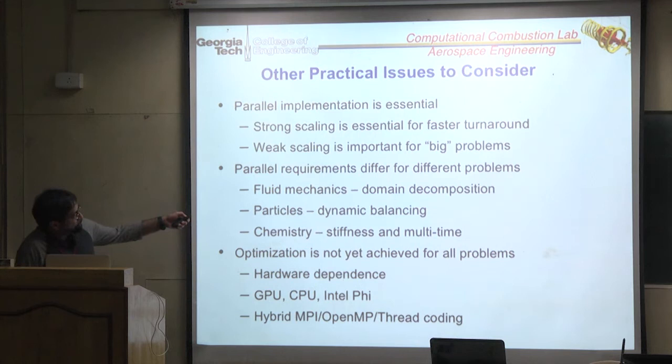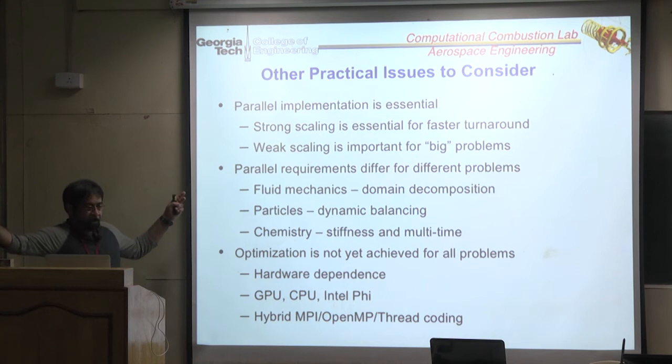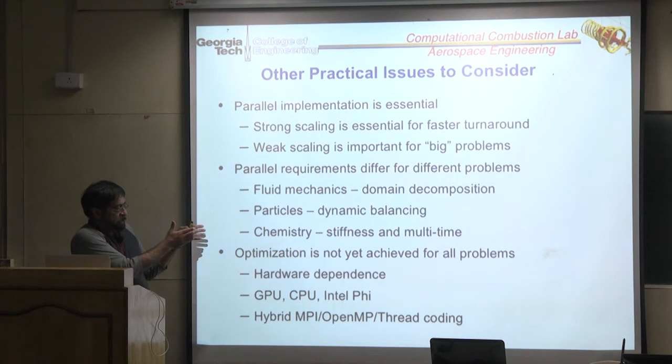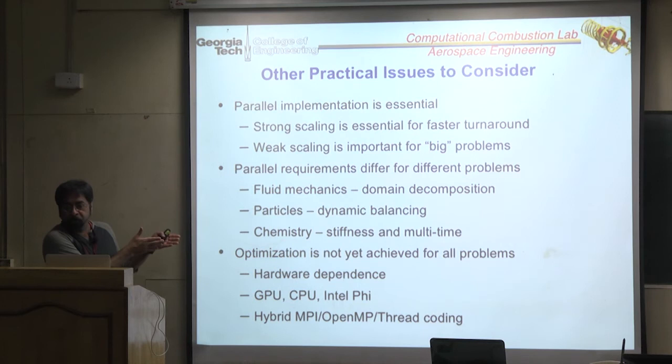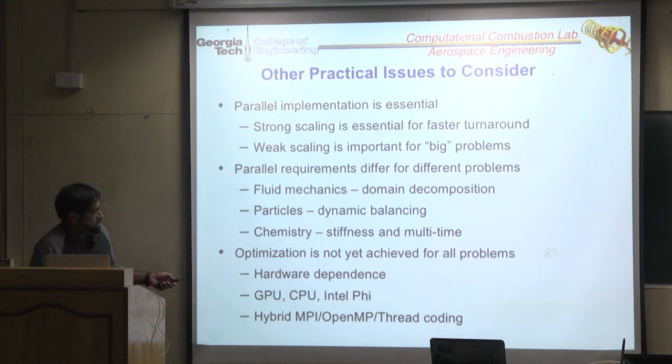For fluid mechanics, strong scaling is straightforward—domain decomposition, chop and send. Particles are a bigger problem: if you have sprays concentrated in one region, one processor handles a thousand particles while another handles none, creating severe load imbalance. You need dynamic load balancing. Add chemistry stiffness and you bring in further issues. We combine all kinds of approaches and are starting to look at GPUs and Intel Phi accelerators, but right now we use typical MPI codes.